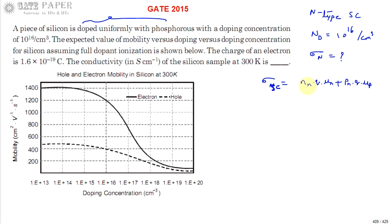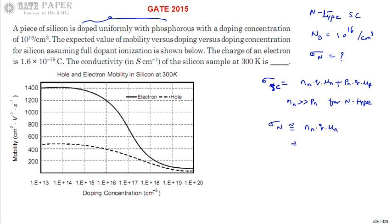In an n-type semiconductor, majority carriers are electrons and minority carriers are holes. The majority carrier concentration is very large compared to minority carriers, so we can approximate: σn ≈ nn·q·μn, where nn is the number of electrons in the semiconductor.